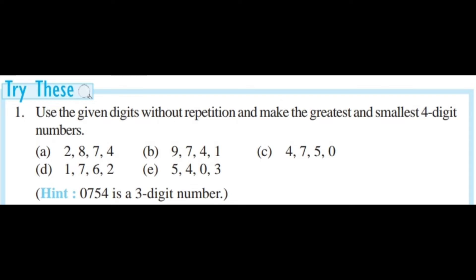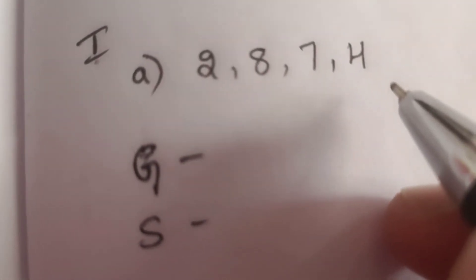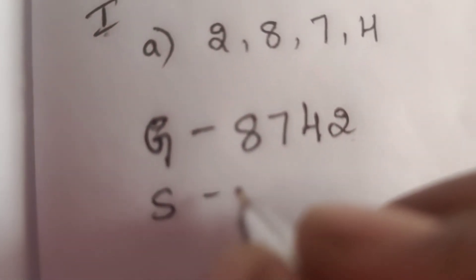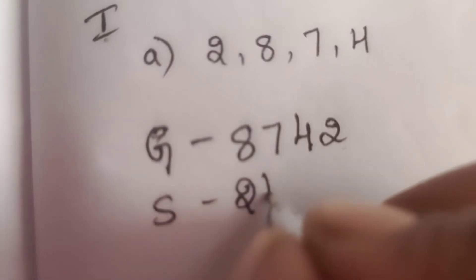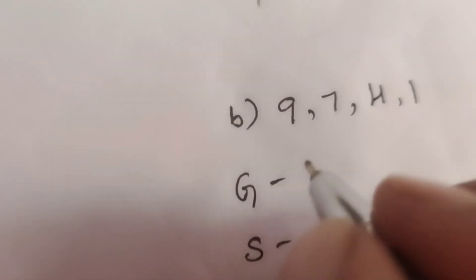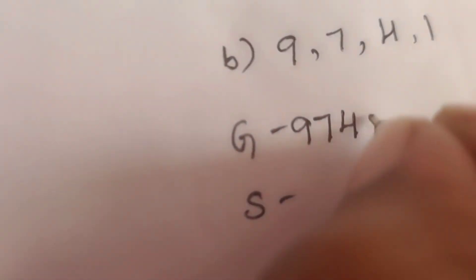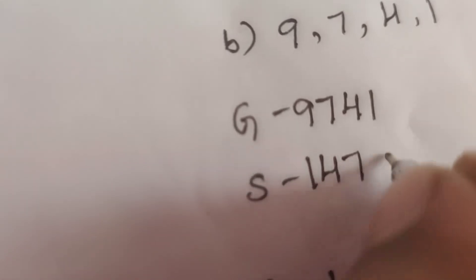Next concept: Use the given digits without repetition and make the greatest and smallest 4-digit numbers. Let us see the first one: 2, 8, 7, 4. The greatest 4-digit number is 8742. The smallest number is 2478.